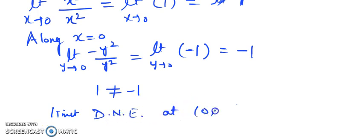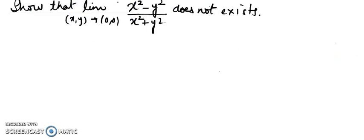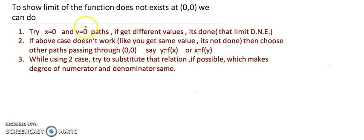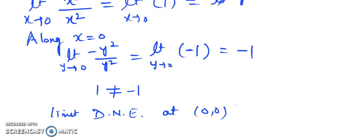Since 1 ≠ -1, we can say the limit does not exist at the origin. This question is done. Now let's take one more example. The next question is: show that the limit of xy/(x² + y²) does not exist at the origin. I want to make it clear that taking only the x- and y-axes does not always work — you cannot always declare that the limit exists if those two give the same answer.